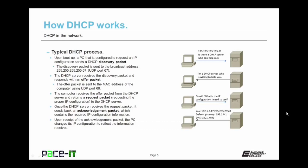Once the computer receives that offer packet from the DHCP server, if it's going to use that DHCP server, it returns a request packet — requesting the proper IP configuration from that specific DHCP server. Once the DHCP server receives the request packet, it sends back an acknowledgement packet. This acknowledgement packet contains all of the required IP configuration information. Once the PC receives the acknowledgement packet, the PC changes its IP configuration to reflect the information received from the DHCP server. That's the typical DHCP process.